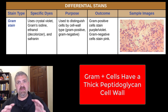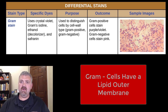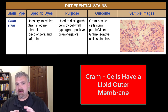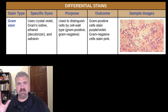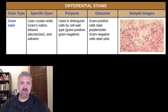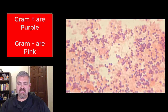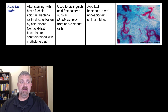Gram positive cells are going to have big thick peptidoglycan cell walls. Gram negative cells are going to have a thin peptidoglycan cell wall with a lipid outer membrane that can make them a lot harder to deal with in many cases. Just watch the separate video on the gram stain. Here we see a close up — the purple organisms would be gram positive, the red or pinkish organisms would be gram negative.